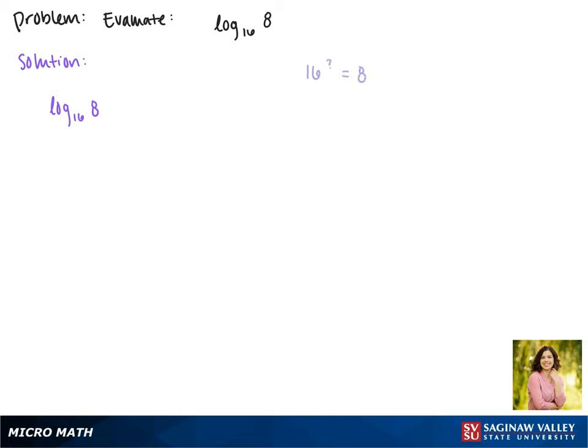Since our number is getting smaller, let's start by taking a square root. The square root of 16 is 4, but we can't raise 4 to some power and get 8.